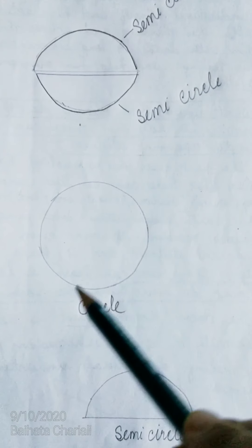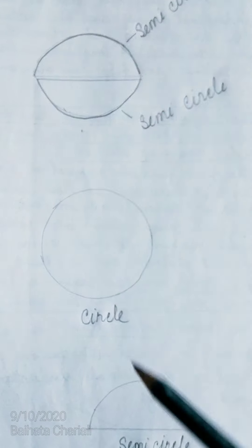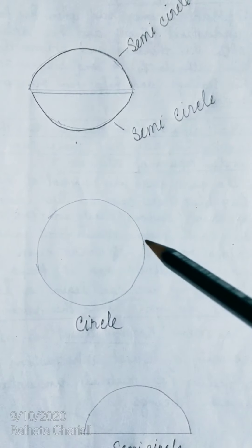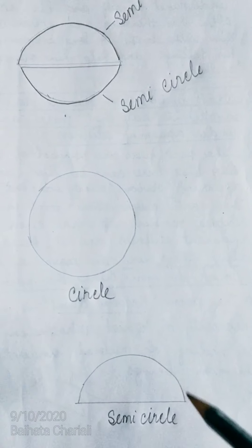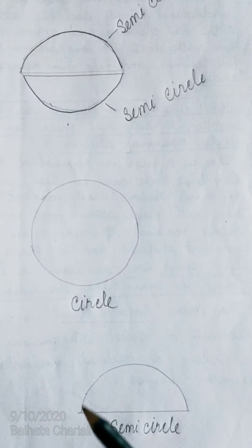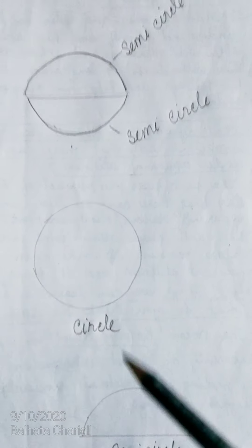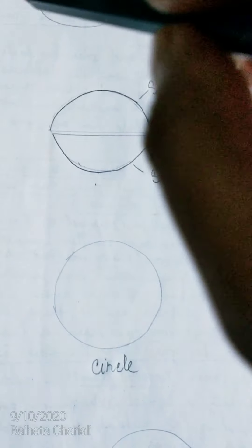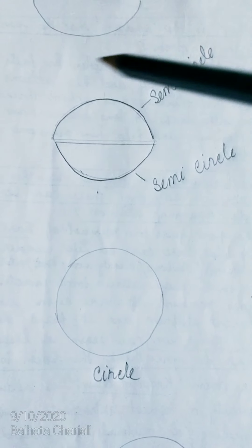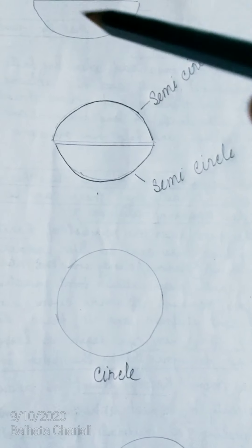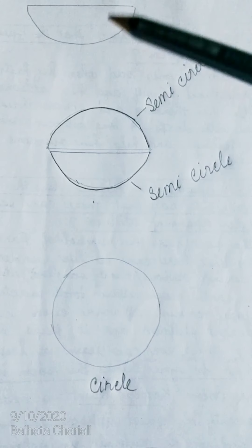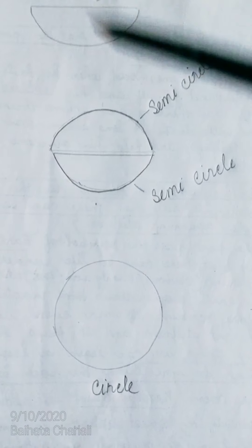This is the picture of the circle. It is full. We make a line in the middle of the circle and it becomes a semi-circle, or it is called the half circle. Again, we are making a line in the middle of the full circle and it becomes a semi-circle or it turns into a half circle.